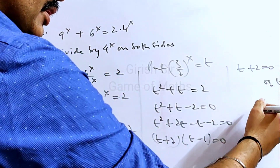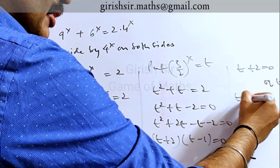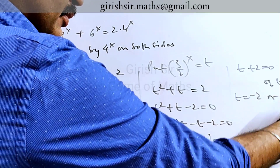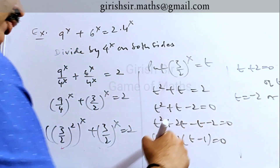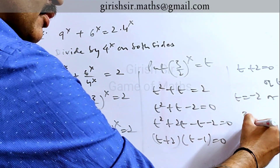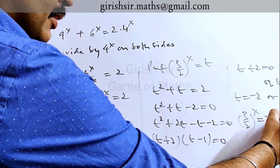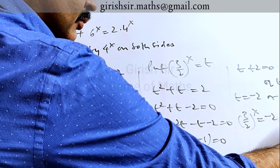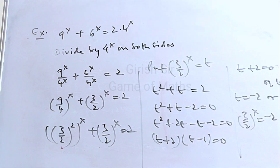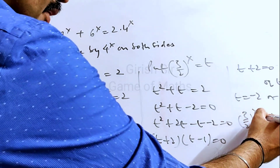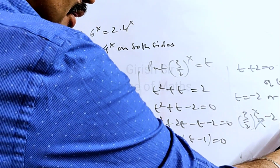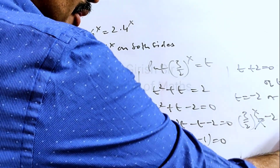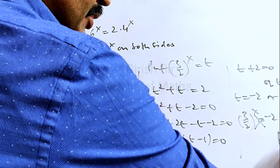We get 2 values of t: either t is minus 2 or t is 1. Now putting back the value of t — t was 3 by 2 raised to x. This cannot be a negative number, so we reject t equal to minus 2. From the other case, x equal to 0 is the only solution.